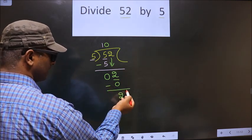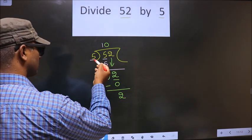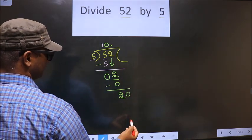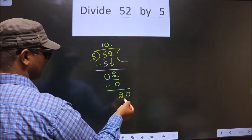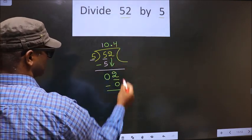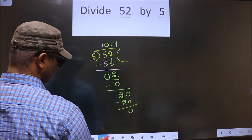Now we did not bring any number down. Now 2 is smaller than 5. So now you can take dot and 0 here. Now here we got 20. When do we get 20 in 5 table? 5 fours 20. So you subtract, you get 0.